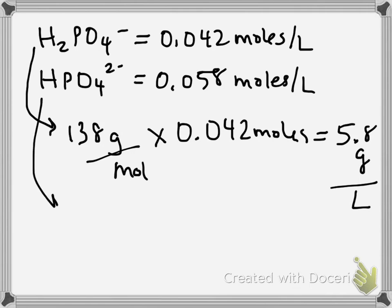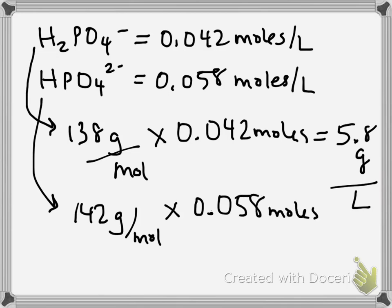And for HPO4, the molecular weight is 142 grams per mole. And you were given this in the beginning of the problem, in the setup of the problem. Times the amount of moles that you have. And that equals 8.2 grams in one liter.